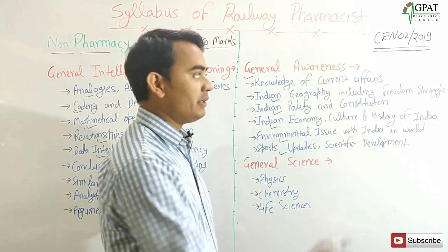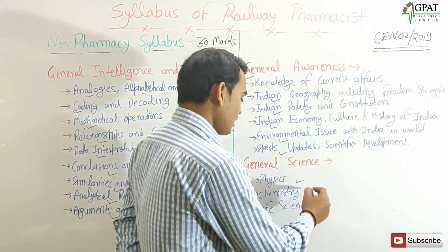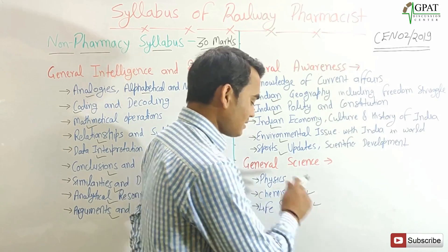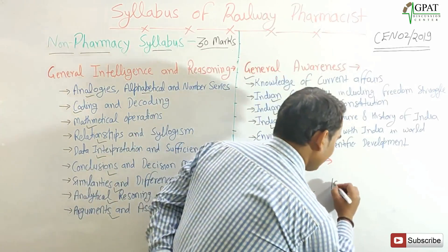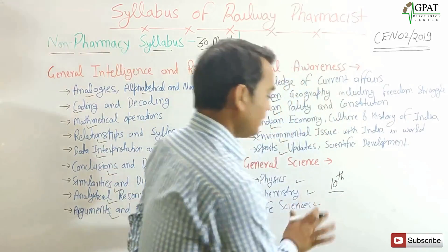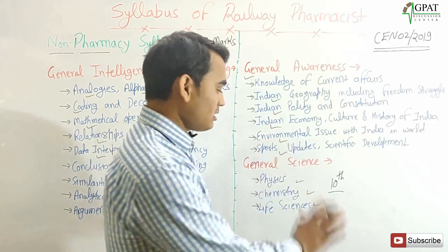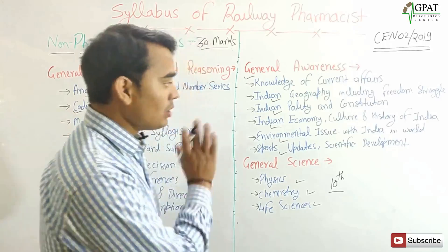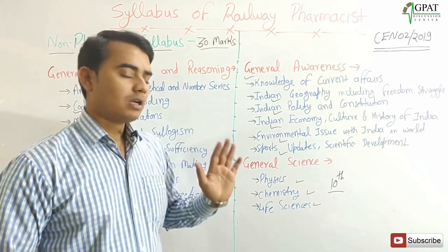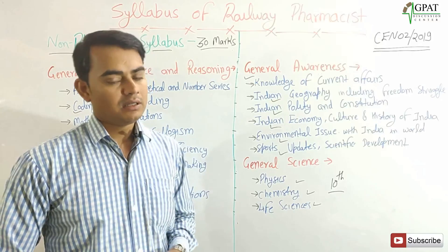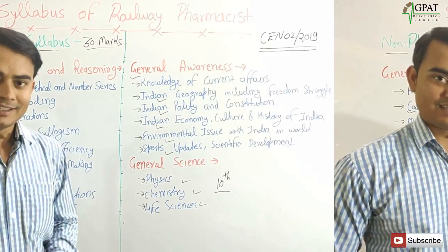Under General Science: Physics, Chemistry, and Life Sciences. This syllabus is only based on the 10th standard CBSE pattern. So this is the whole syllabus of the Railway Pharmacist. I hope covering these important points will definitely make your result positive. All the best, thank you.